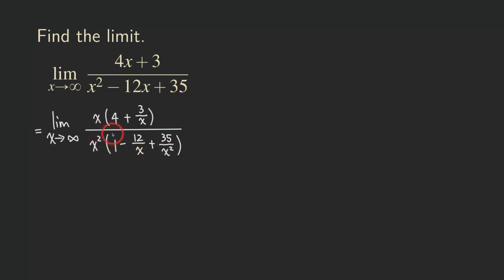So see what's going on: we factored out the highest powers of x from both the top and bottom, even if they are different powers. We can cancel the x from the numerator with part of x squared in the denominator — not completely cancel, but reduce — leaving one x factor at the bottom. So we get a new limit problem: the numerator is (4 + 3/x), and the denominator is x times (1 − 12/x + 35/x²).